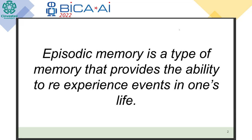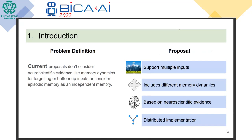For that reason these abilities are important — we are trying to create a virtual creature that has human-like behavior. The problem with current proposals is that they don't include a lot of dynamics like forgetting, and they don't include disabilities in their models. For that reason we propose an architecture that supports multiple inputs, includes different memory dynamics like forgetting, is based on neuroscience evidence, and is a distributed system implemented using different resources.